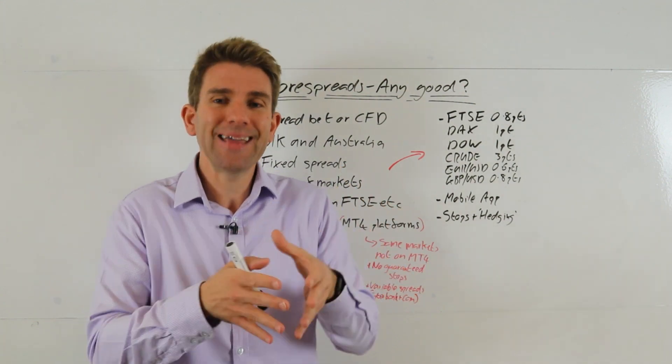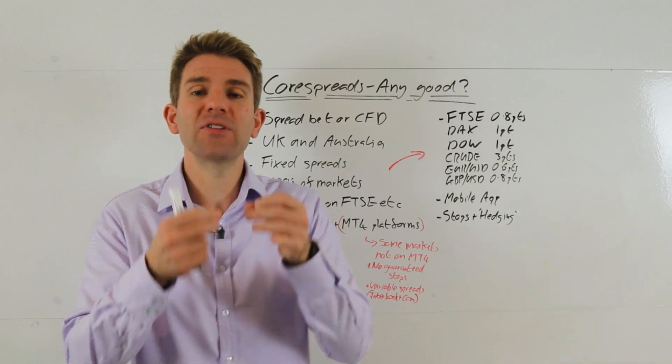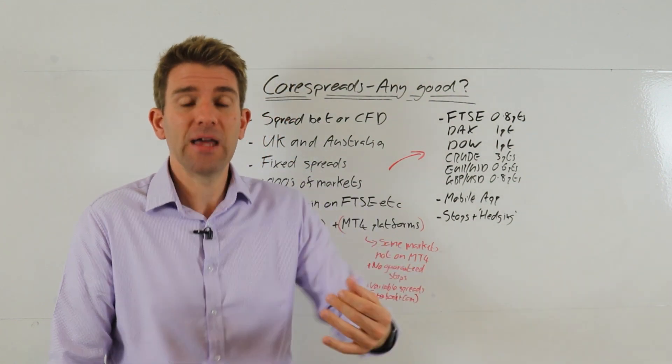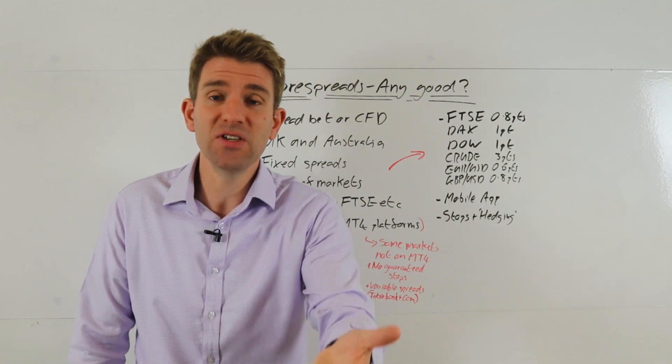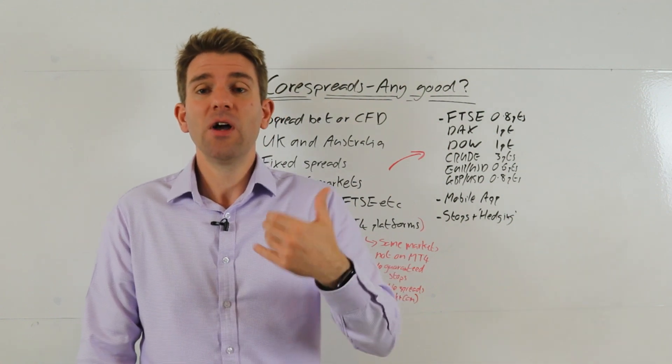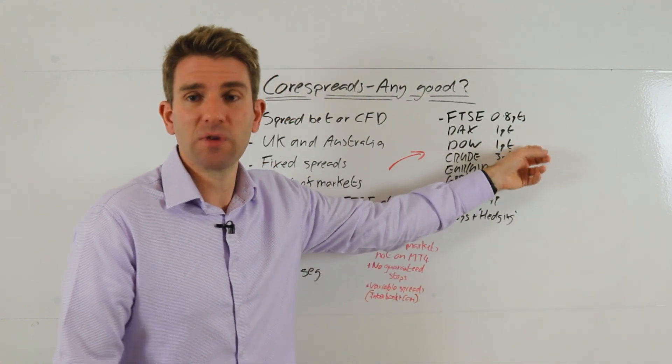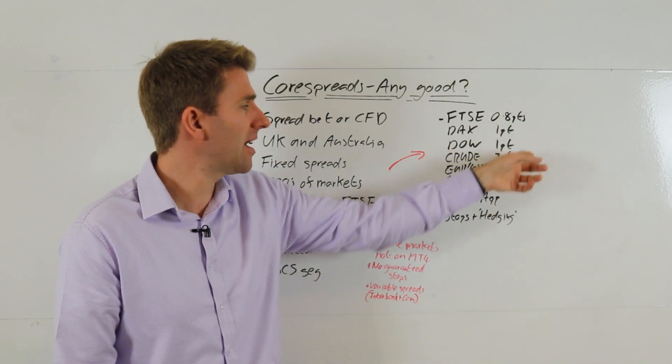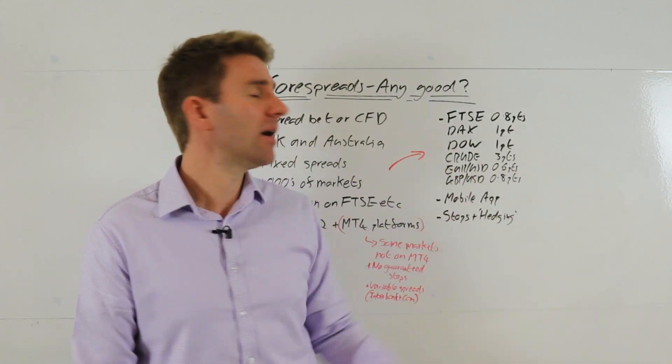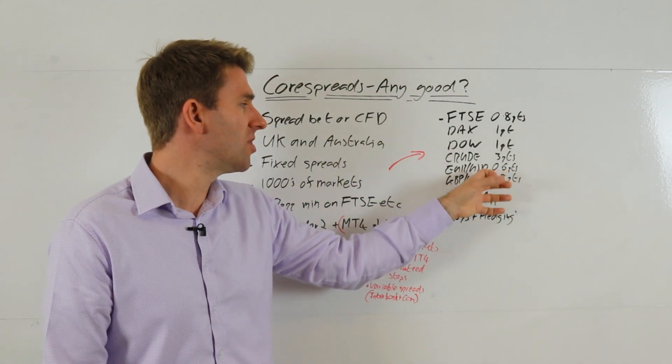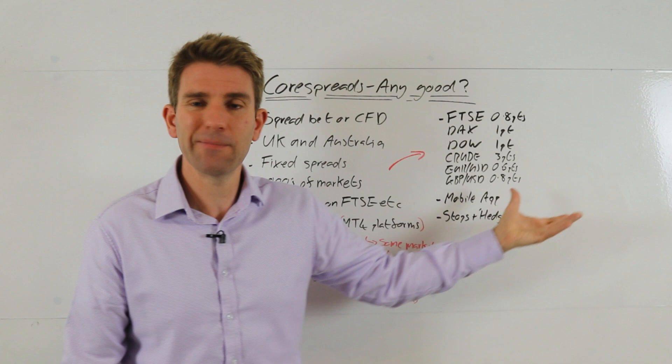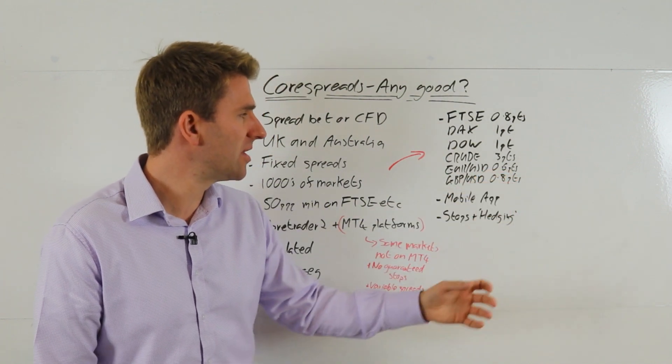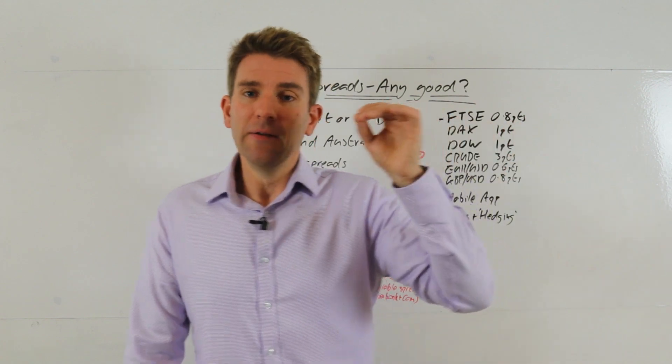If you've got a strategy that trades at two o'clock in the morning on the Dow, then the spread at that time is what's key to you. If you're a day trader of the Dow and you trade intraday, then this is the spread that's important to you. If you day trade DAX, this is the spread that's important to you. So Footsie 0.8, DAX one point, Dow one point, crude oil three points which is decent. And then we've got Euro/US Dollar 0.6 points or pips, GBP/USD 0.8 - pretty good as well.